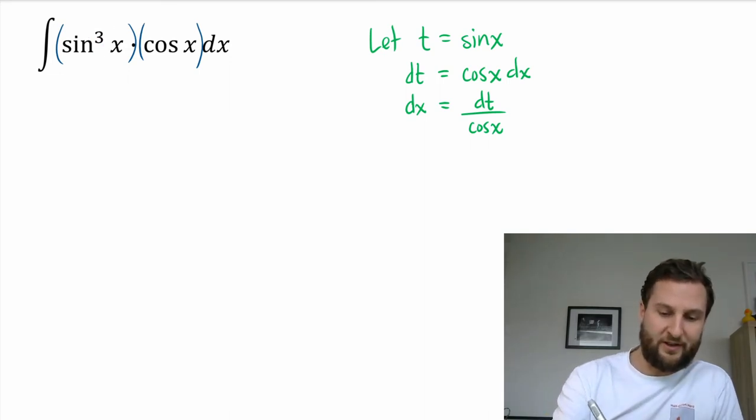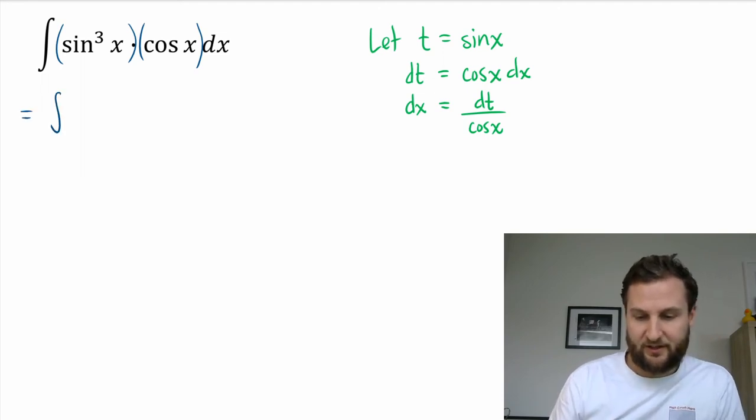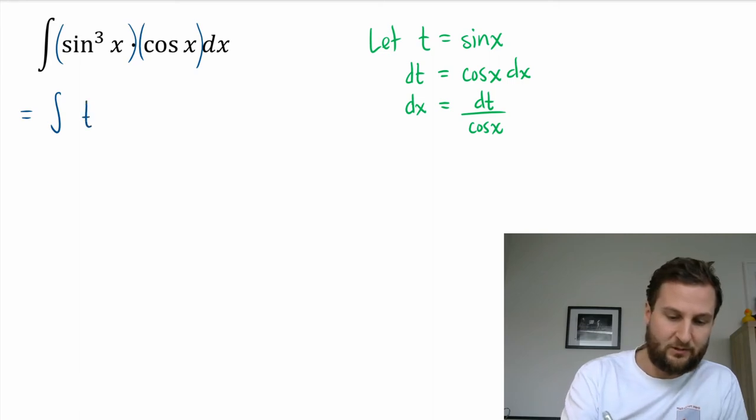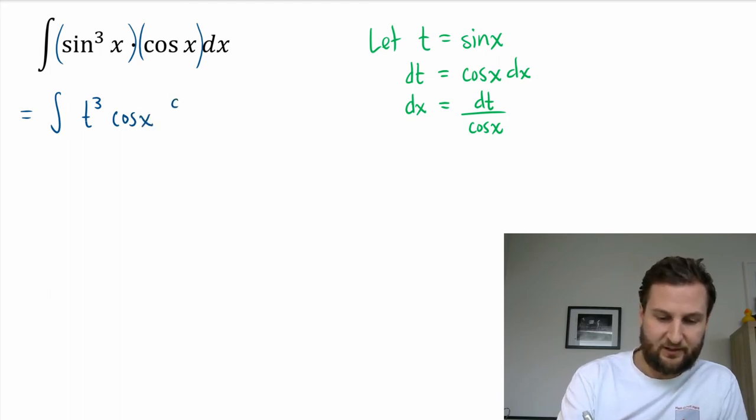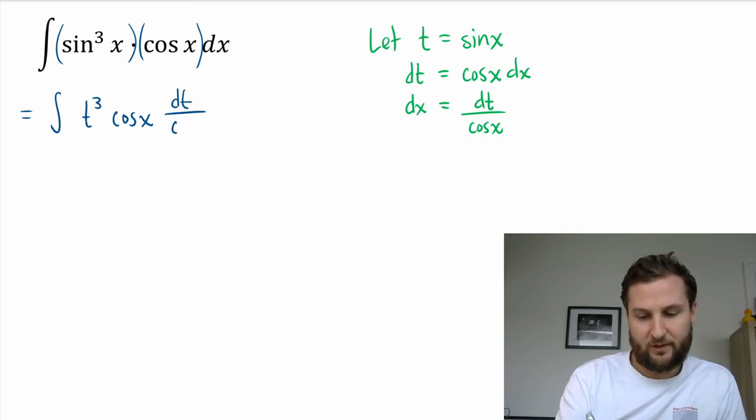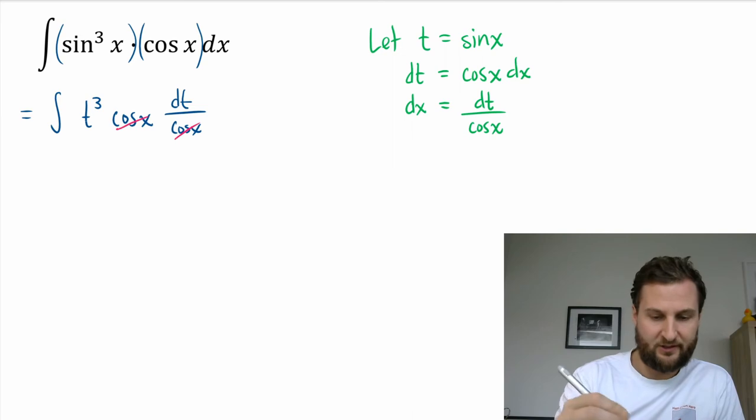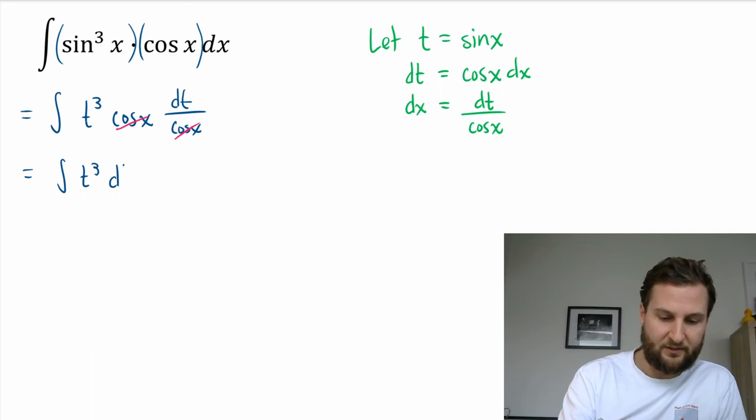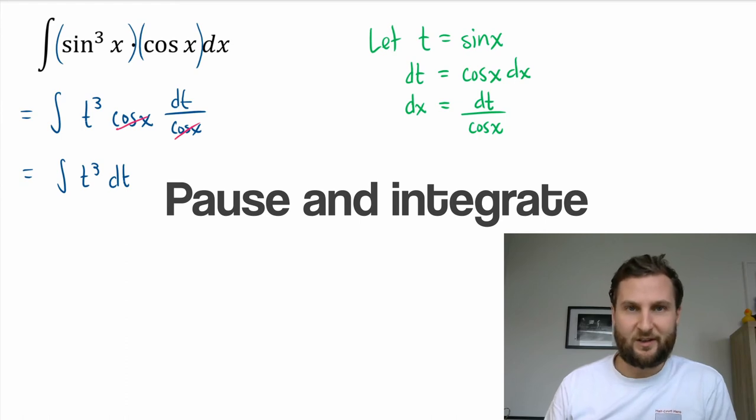This integral now equals instead of sine cubed, I have t cubed, and then I have cosine x, and then instead of dx I have dt over cosine x. Indeed, that one is on top and that one is on the bottom, so we can cancel those, and now my integral simplifies to t³ dt.